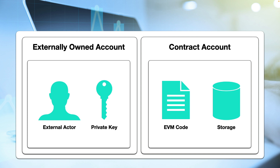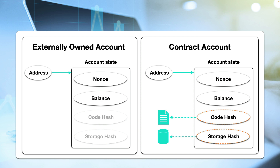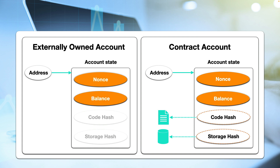An externally owned account holds a private key — because it's a wallet, it's the only thing that can control data on a decentralized ledger. The contract account, on the other hand, doesn't have a private key; instead it holds smart contract code, or what we call EVM code. Both accounts have four main fields, two of which are only used in the contract account. The first field both accounts share is called a nonce — a counter indicating the number of transactions sent from an EOA or contracts created from a contract account.